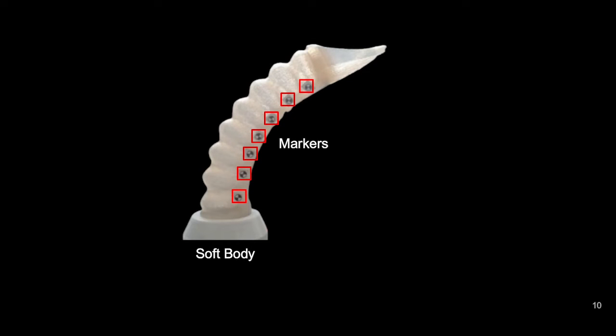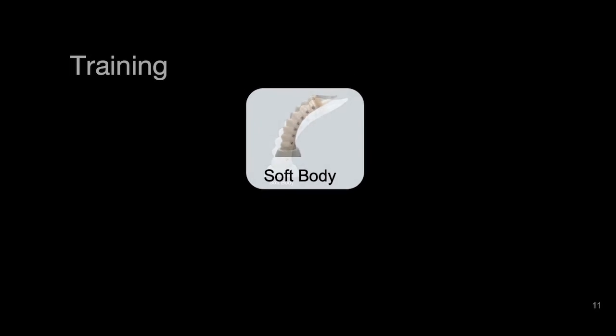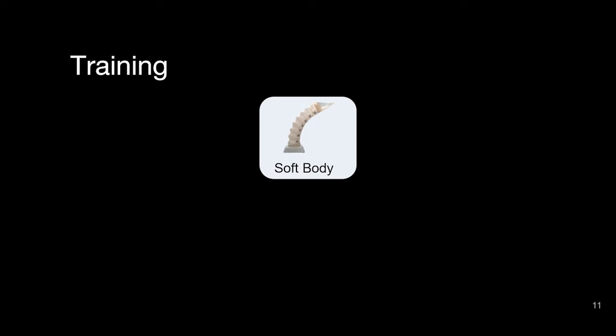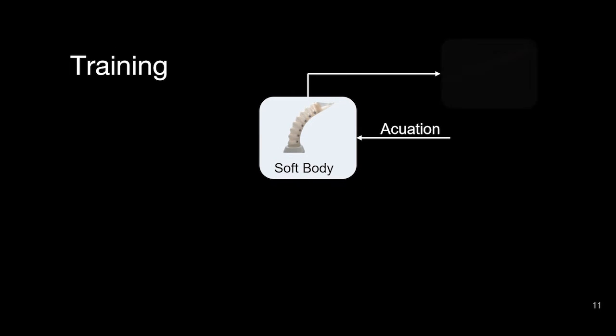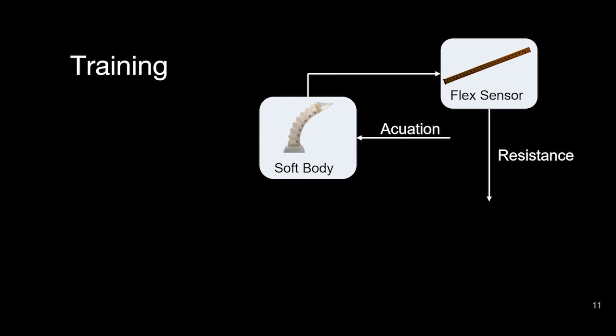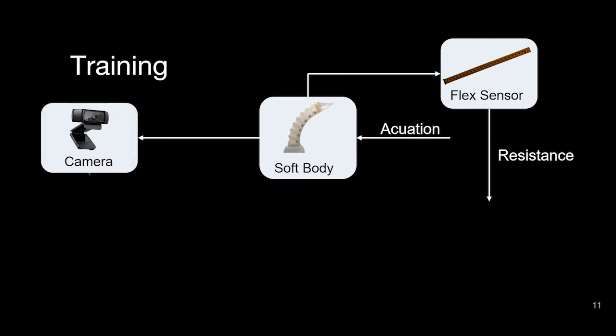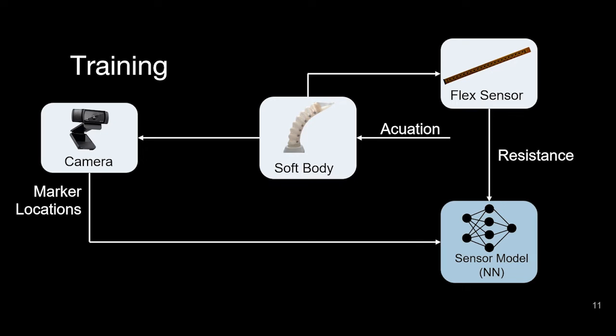We embed the sensor within the soft body and attach a series of markers to the surface. As the soft body deforms under actuation, the sensor will output varying resistance measurements, while a camera tracks the movement of the markers to describe the deformation. Using this data, we train a sensor model to map the resistance to sensor shape.